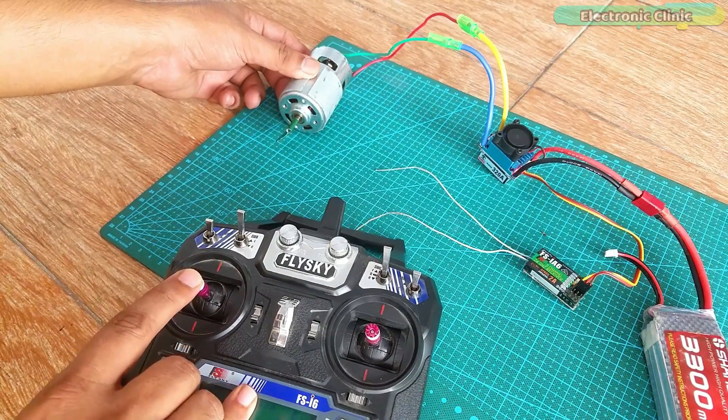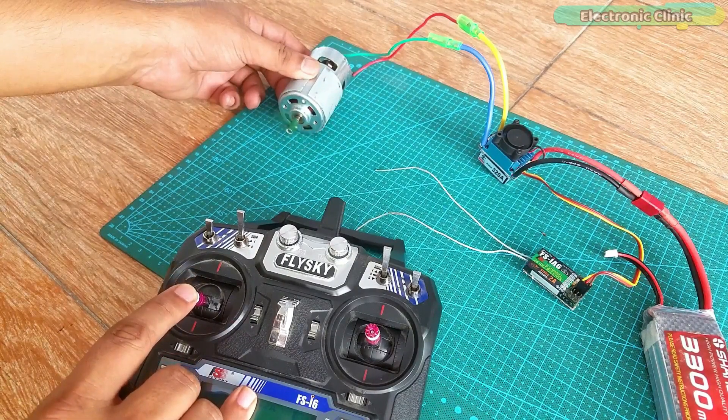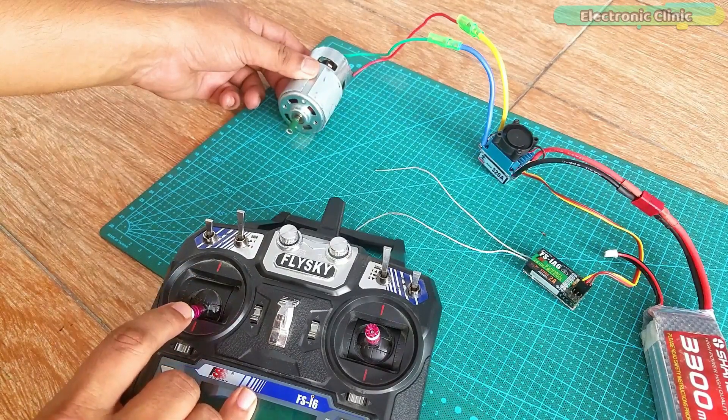First you will have to stop the motor and then you can slowly move the stick in the reverse direction. This will change the direction of the DC motor.